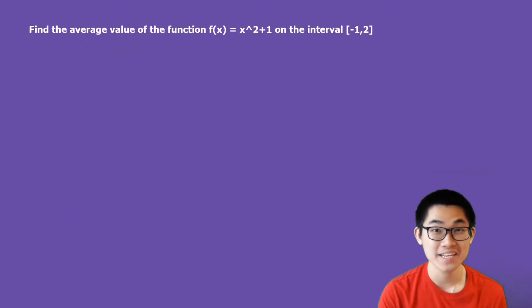Let's go ahead and do a quick example. So find the average value of the function f of x is equal to x squared plus 1 on the interval negative 1 to 2.